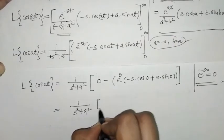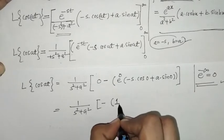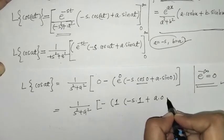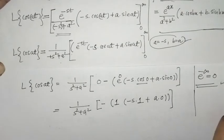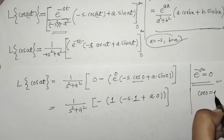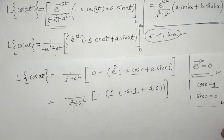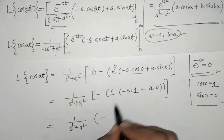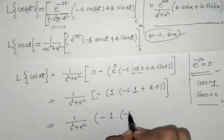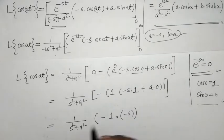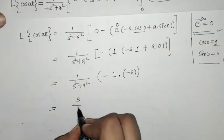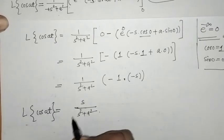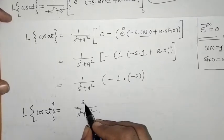Now we simplify. e raised to 0 is 1. cos(0) is 1 and sin(0) is 0. So the lower limit term gives: minus 1 times (minus s times 1 + a times 0), which is minus(minus s), giving plus s. Therefore the Laplace of cos(at) equals s upon (s² + a²).